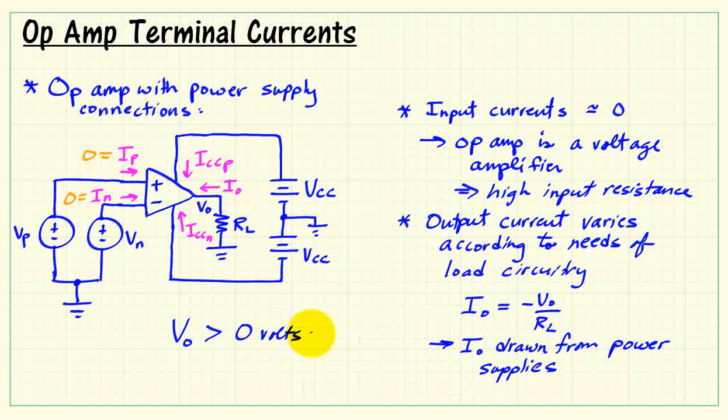So for example, when the output voltage is greater than zero volts, then the actual flow of current to the load is in this direction. And we would say that IO is a negative value.